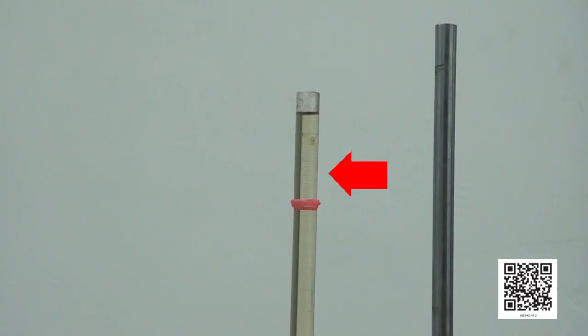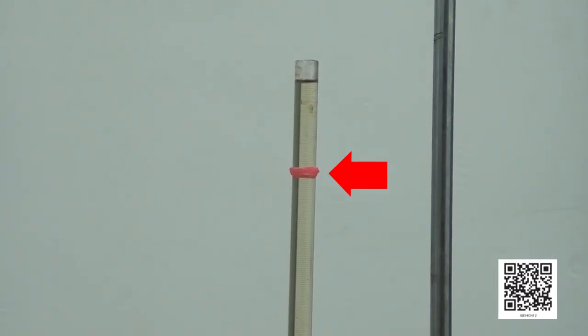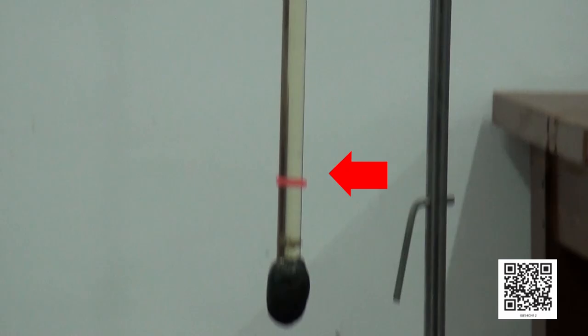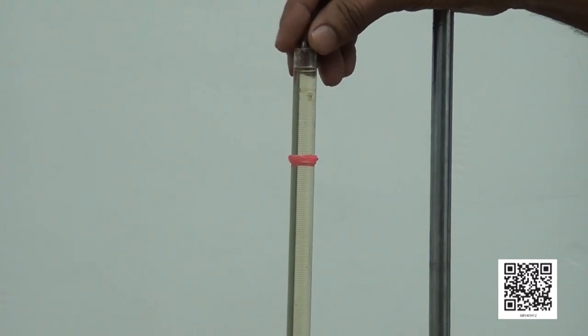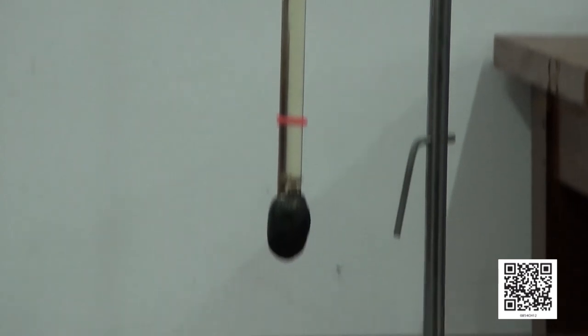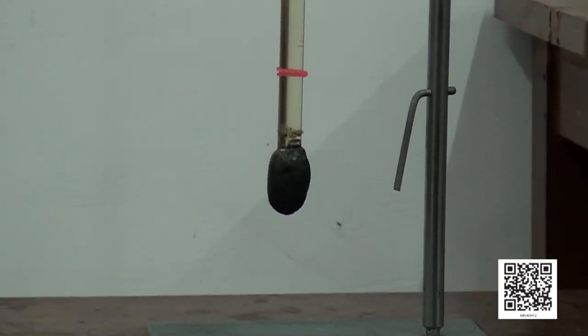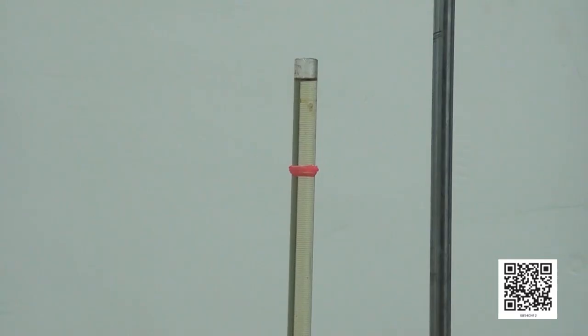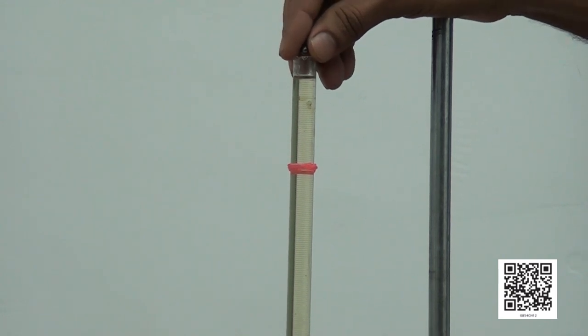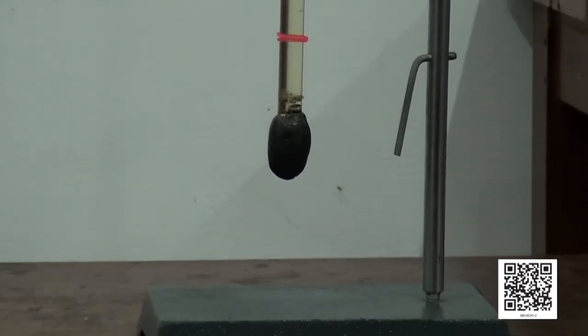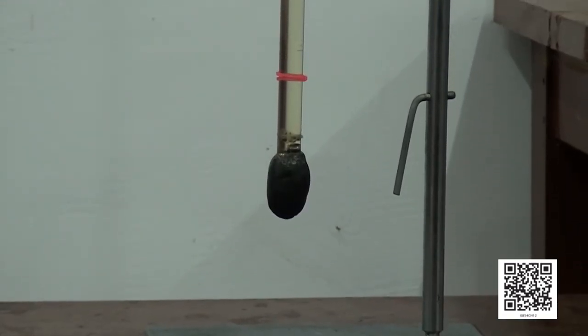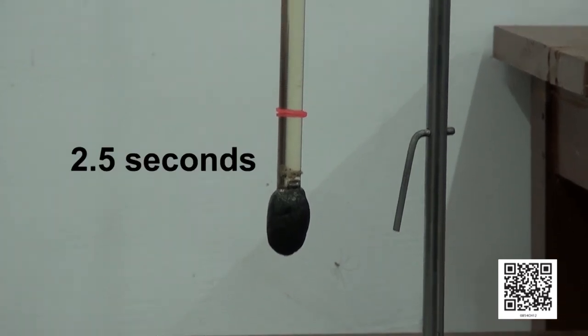As the ball crosses this mark, I am going to start a stopwatch. And, it will be stopped as the ball crosses the second mark. In this way, I can measure the time taken by the moving ball to travel this distance. Let us start this. Now, I drop the ball and the time is measured to be 2.5 seconds.